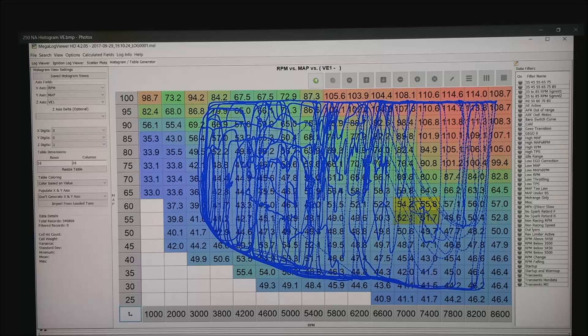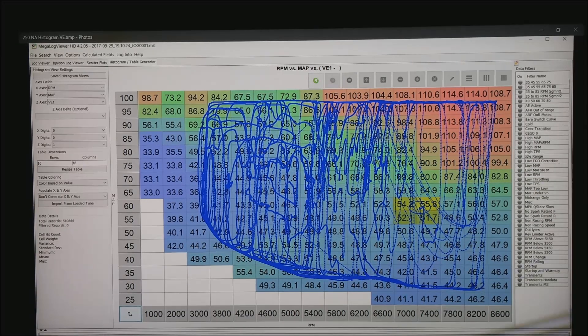Now if we open up the histogram view in Megalog Viewer HD, what we will see is I've chosen, again, RPM along the bottom, manifold absolute pressure on the left, and out in the field is the VE.